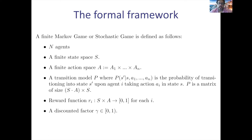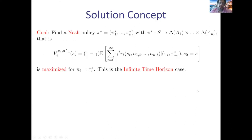Now let's see what we can do with these settings. In single-agent Markov decision processes, the classic setting, we're interested in finding an optimal policy that maximizes the utility of the agent. However, since we have multiple agents, this is not a valid solution concept. There is no way to say we need to find an optimal policy — there are N utility functions and you cannot optimize all of them at the same time.